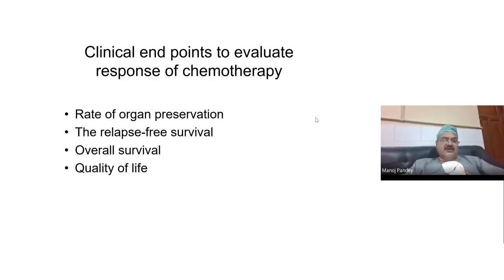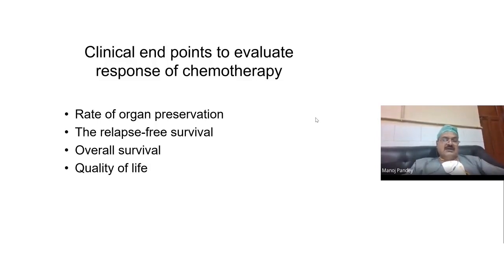For induction and neoadjuvant chemotherapy, you look at the rate of organ preservation — how many organs were preserved versus removed. In metastatic disease, you look at cure rate. Where chemotherapy is used as adjuvant, you look at relapse-free survival — the amount of time a person treated with chemotherapy remained without recurrence or relapse.